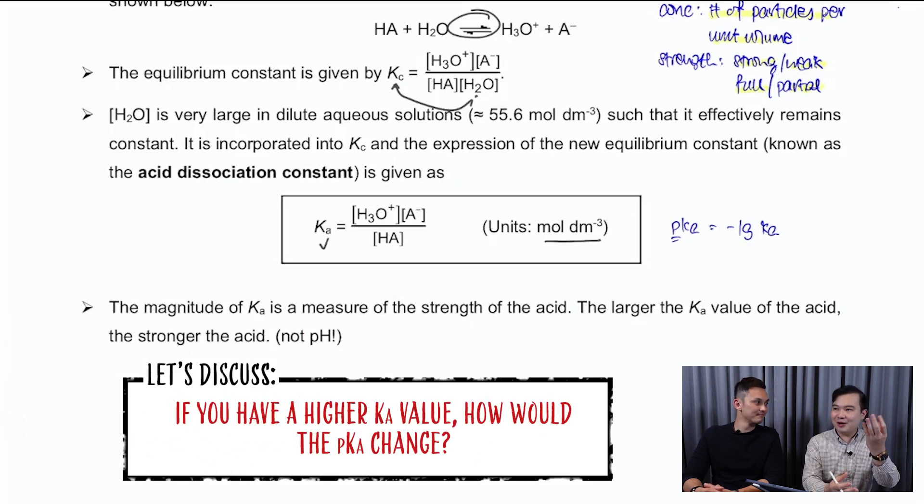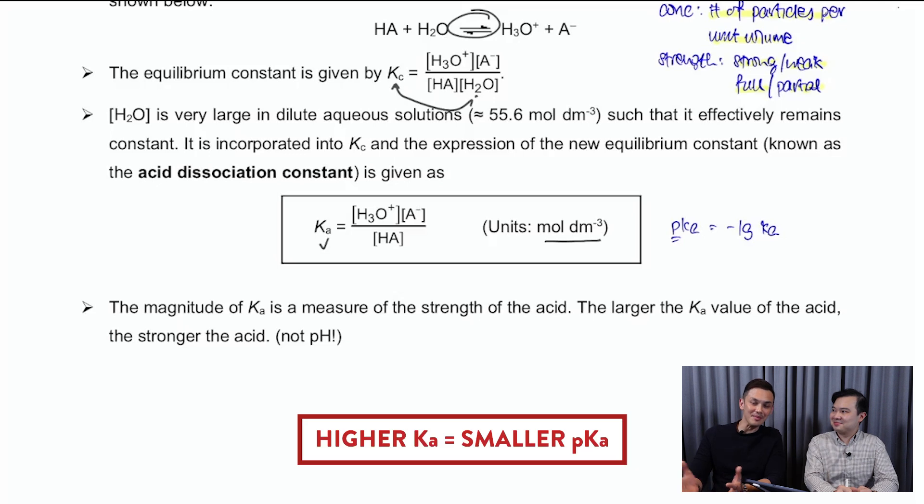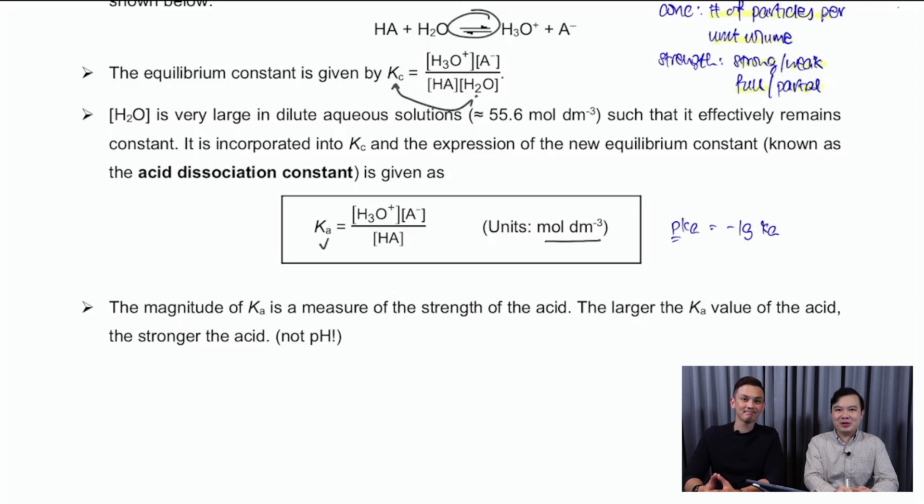The significance of the Ka value is simply telling me how many percent of it has dissociated. A higher Ka value will imply that you have higher dissociation, meaning that it's going to be a stronger acid. William, can you share with me, if you have a higher Ka value, how will the pKa change? Because the relationship is inverse between them, so a higher Ka actually means it's going to be a smaller pKa. That's right. So in general, this will work for the base as well.